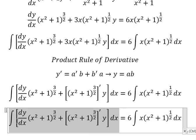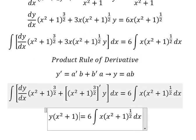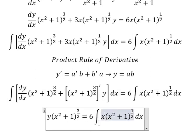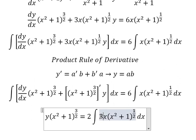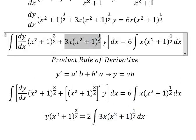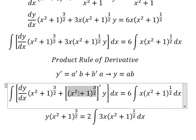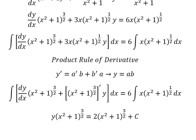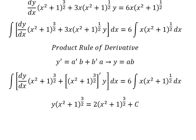The integration gives us y multiplied by (x² + 1) to the power of 3/2. For this step I will put numbers 2 and 3 in here. The integration of this term is similar to the integration shown here. We add constant C, and this is the end. Thank you for watching.